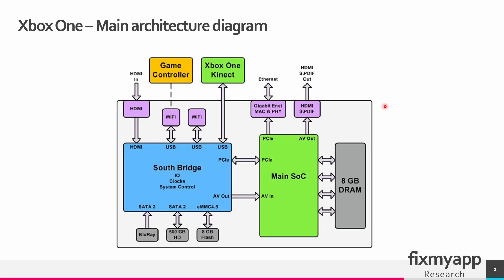So here you can see the main architecture diagram. The Xbox One is developed by Microsoft in 2013. The core components are the main SoC, Southbridge, DRAM, flash memory, optical drive, and internal drive. Those are the most important components. The SOC, shown in green here, stands for system on a chip. It is the central processing unit of the Xbox.